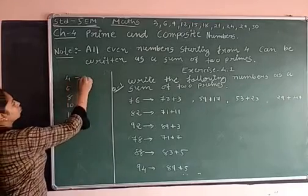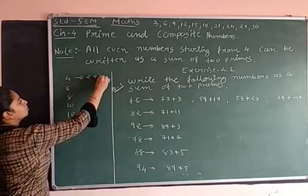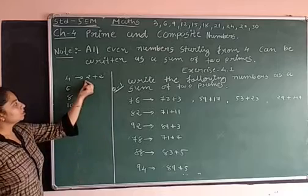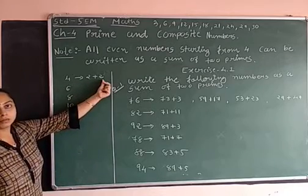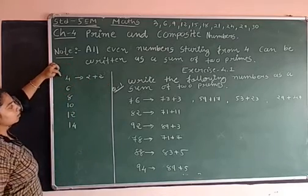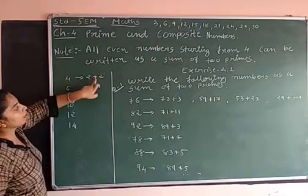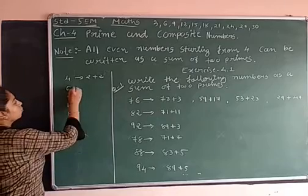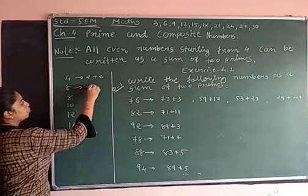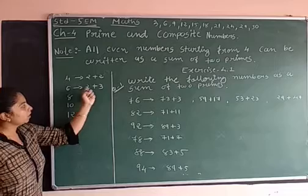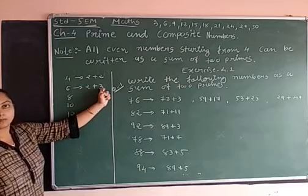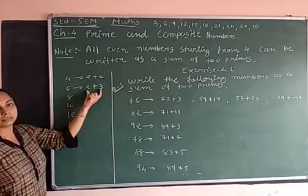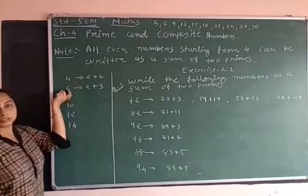Okay, 4. Can I write 2 plus 2? What is this 2? Prime numbers. 4 is composite. Now, go for 6. So, it is 3 plus 3. 2 is also prime, 3 is also prime. But if you will add this, you will get a composite number which is 6.